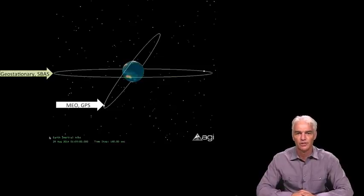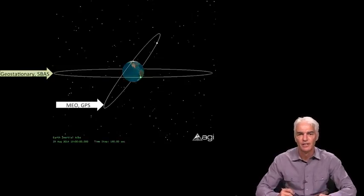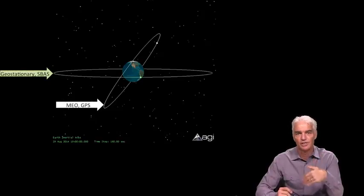So now you'll see the geostationary satellite's halfway around. The GPS satellite did one full orbit and another full orbit.